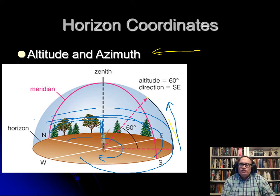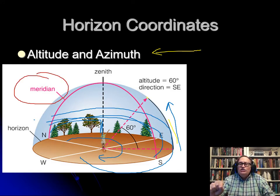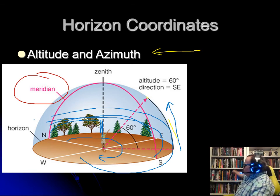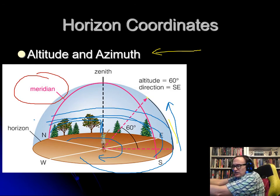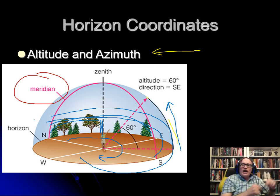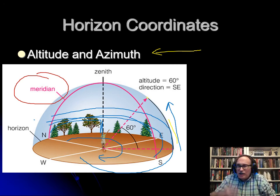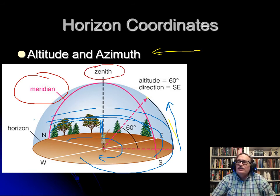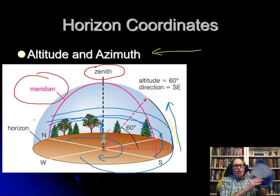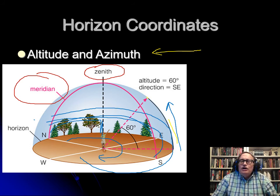In horizon coordinates, a couple of other terms you want to know. One is the meridian — an imaginary line that runs from due north to due south going straight overhead. Things rise in the east and set in the west, so midway in the sky is on the meridian. That's when things are highest in the sky. An astronomer would calculate when things are on the meridian for the best viewing. The point straight overhead, directly over your head, is called the zenith. On your star wheel, the zenith is located right about in the center.